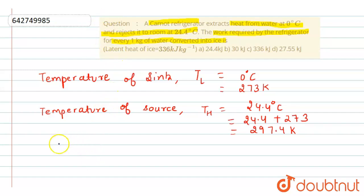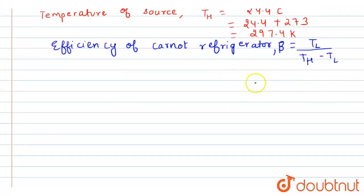Now firstly we will calculate the efficiency. So how we can do that? Efficiency of Carnot refrigerator is represented by beta equals to TL divided by TH minus TL. Now I will use the values here. So this will be equals to 273 divided by 297.4 minus 273.